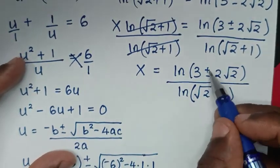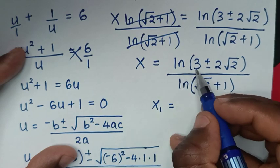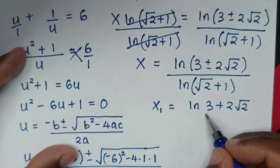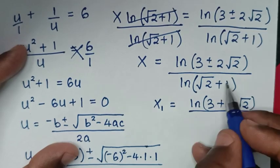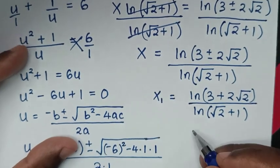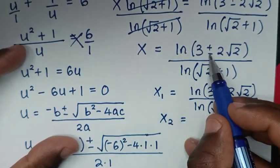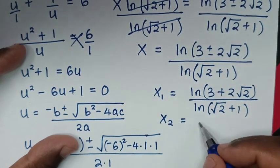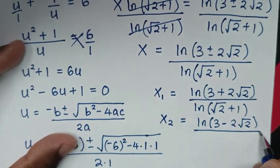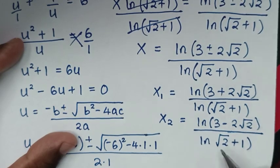The first value of x is x = ln(3 + 2√2) / ln(√2 + 1), when we take the positive sign. The second value of x is x = ln(3 − 2√2) / ln(√2 + 1), when we take the negative sign.